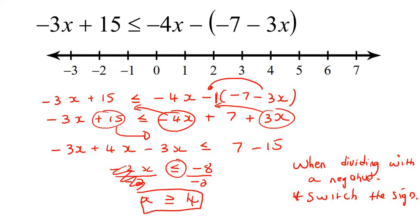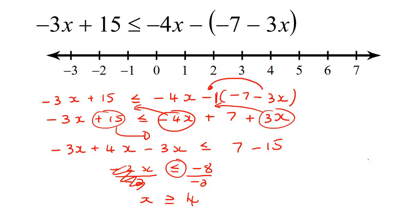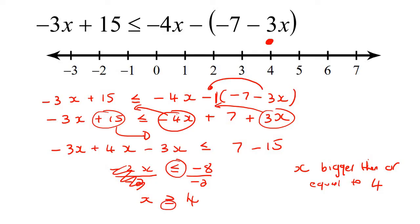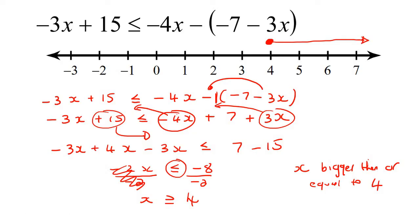So what we end up with is x and the symbol and 4. To translate this: always start with x. The crocodile is about to eat the x, so x is the bigger one. We say x is bigger than or equal to 4, because there's also a little equal sign. So we go to our number line, put a solid filled-in circle at 4 — because it has an equal sign — and then go to the right, since x is bigger. x can be numbers like 4, 5, 6, 7, and so on.